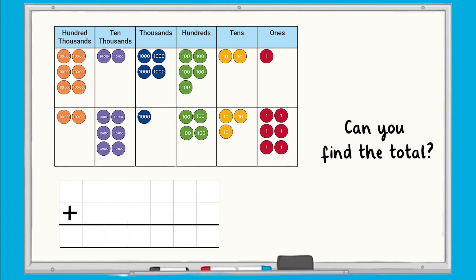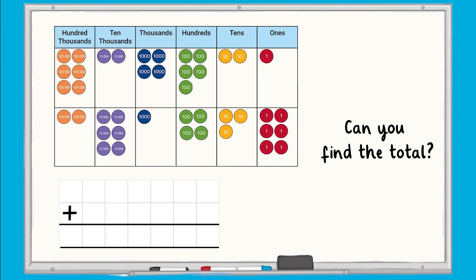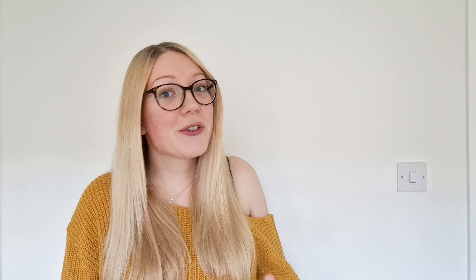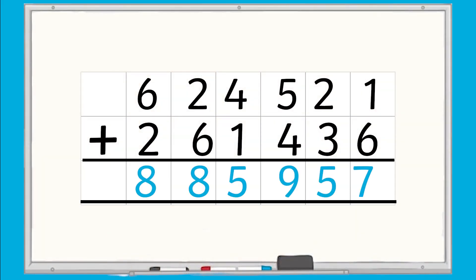Now, can you use this to help you find the total of these numbers using column addition? Write the calculation as a column addition now and see if you can solve it. Did you use your place value chart to help you find the total of each column? Your answer is 885,957.